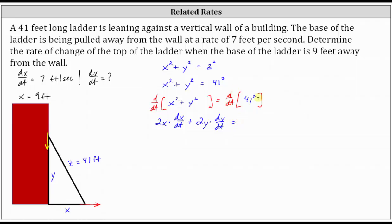This is equal to the derivative of 41 squared with respect to T. And since 41 squared is a constant, the derivative is zero.